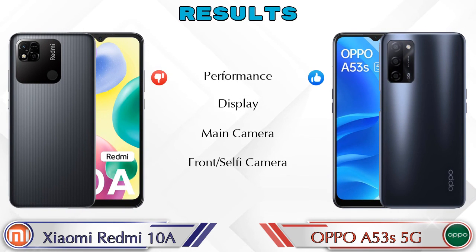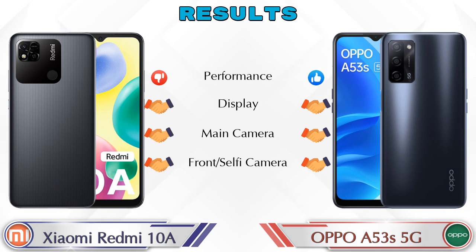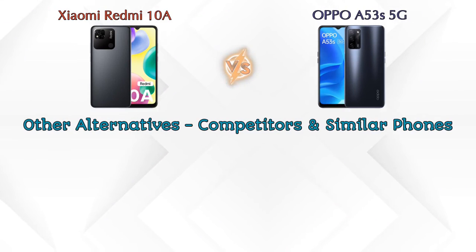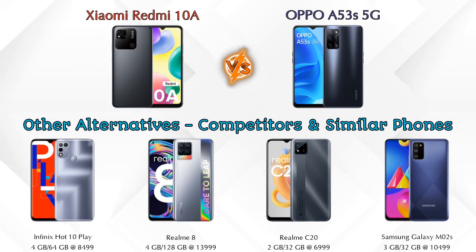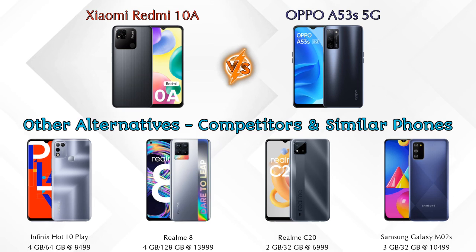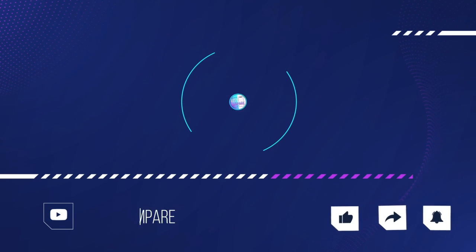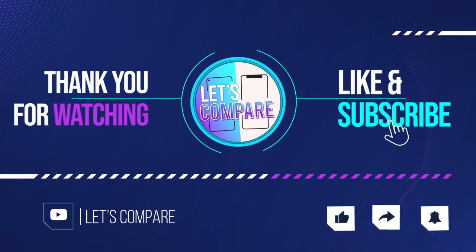Finally, talking about results: in performance, A53s 5G is ahead; in display, both phones are the same; in main camera, both phones are the same; in front selfie camera, both phones are the same. Other competitors at the same price include Infinix Hot 10 Play, Realme C, Realme C20, and Samsung Galaxy M02s. Details about all competitor phones are available in the description. If you like our video, please like and subscribe. Thanks for watching.